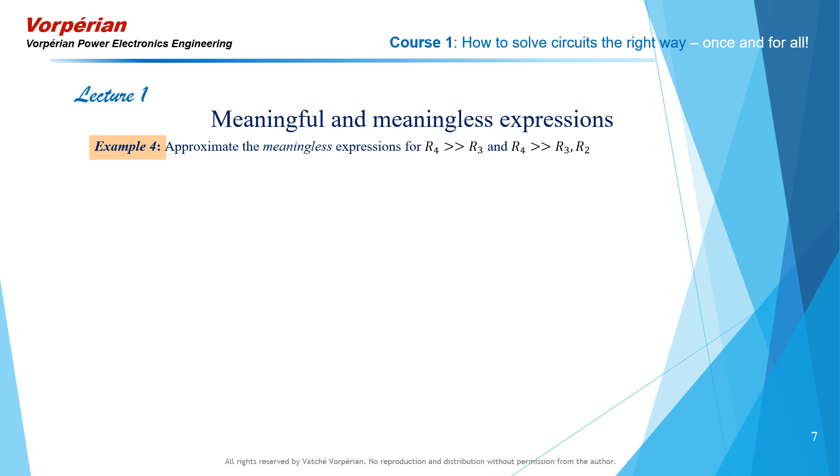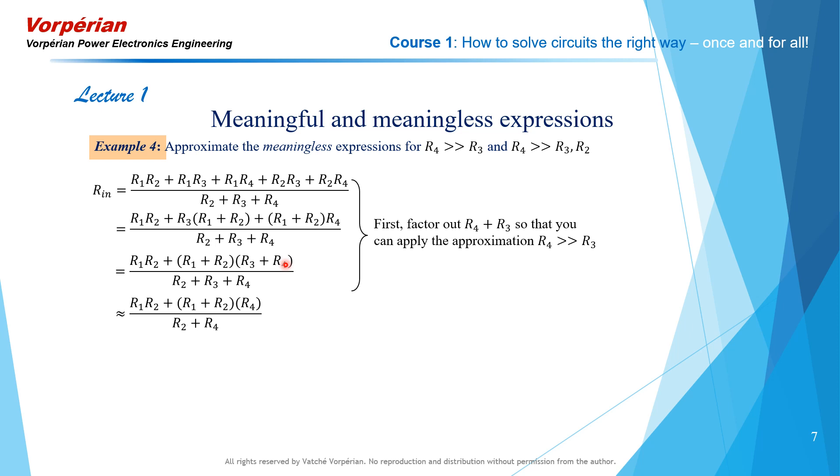We are now going to approximate the meaningless expression for R4 much larger than R3 and R4 much larger than R3 and R2. When I look at the denominator, it's quite easy. If R3 is much less than R4, I can throw it away. But when I look at the numerator, I can't do that readily. I have to do some factoring: R3 into R1 plus R2 and R4 into R1 plus R2 so that I can factor one more time R1 plus R2 into R3 plus R4. Now I can see R3 is much less than R4, so I can throw that away here and in the denominator here, and it reduces to my first approximation.